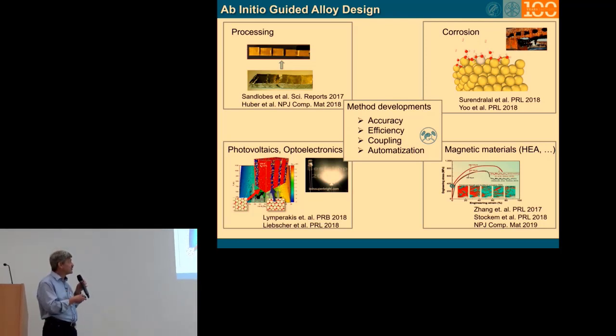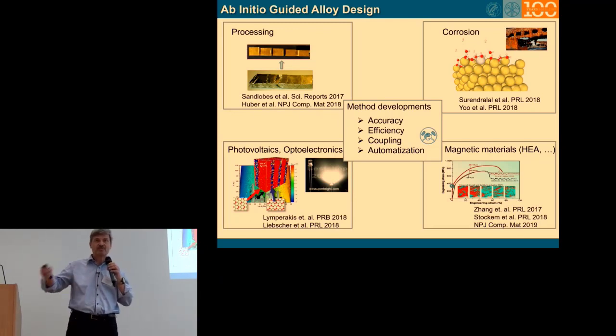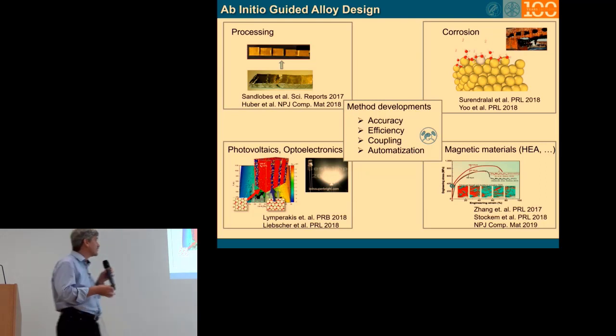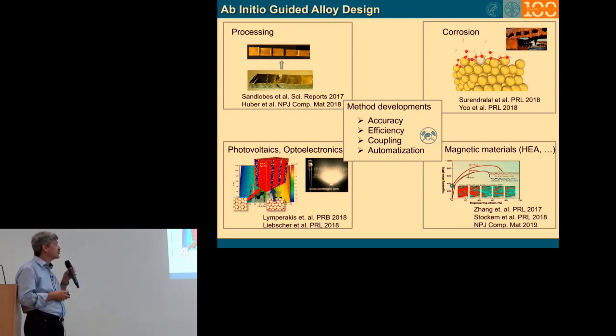And for all of these questions, we really have to push things to accuracy, to precision. So to be precise, but we need really both. So first the precision in order to make sure that we have sufficient accuracy, efficiency, and then we quite often realize it's not done just with a single method. We have to couple various codes, various methods. And this forces us also to go into automatization.